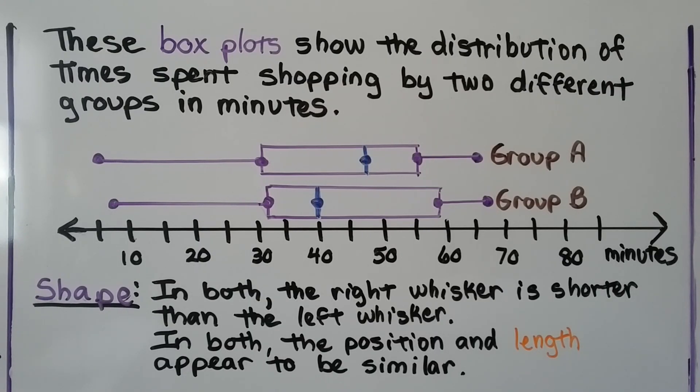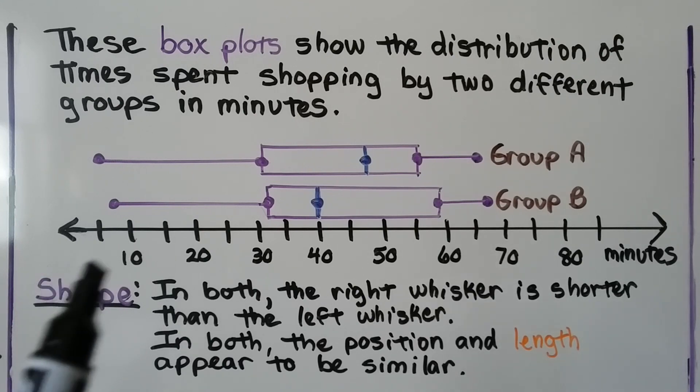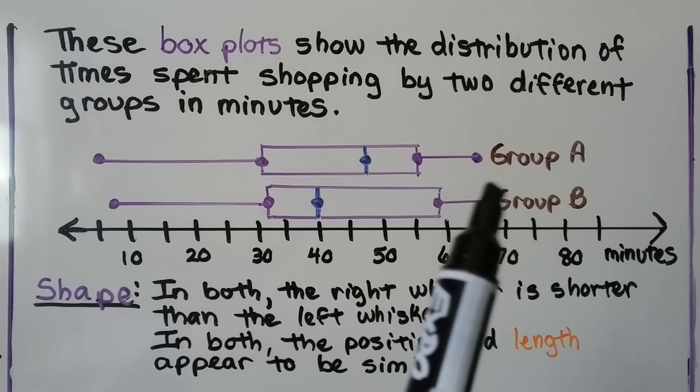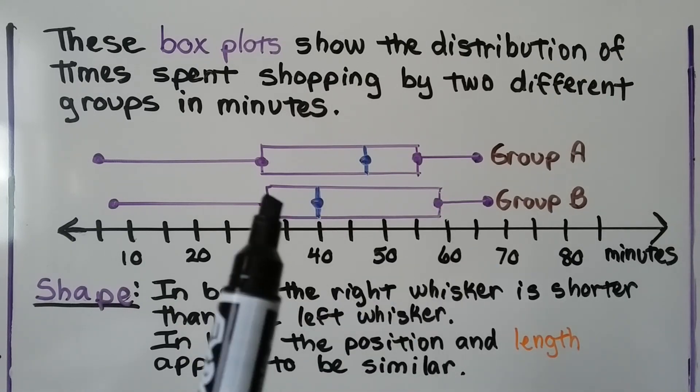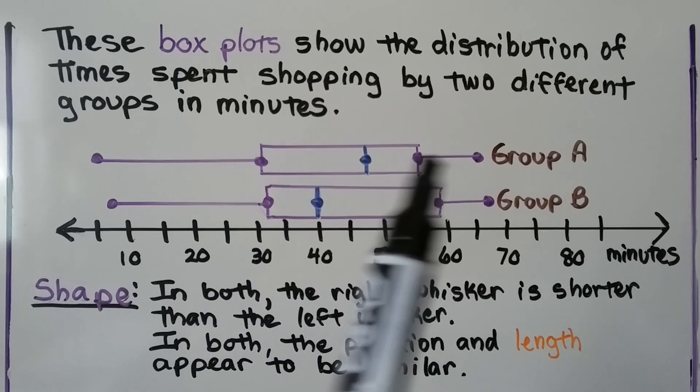These box plots show the distribution of time spent shopping by two different groups in minutes. We have group A and group B. We can see the minutes are in increments of 10. And we can compare the shape. In both, the right whisker is shorter than the left whisker. And in both, the position and length appear to be similar. They're both in between roughly 30 and 60, and they're almost the same length.